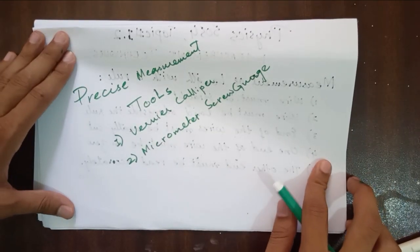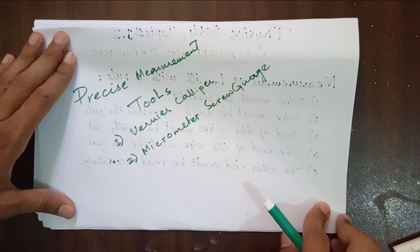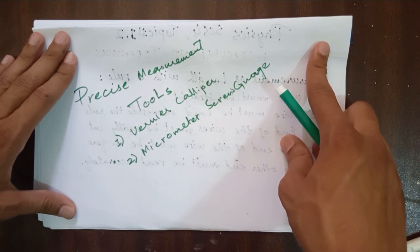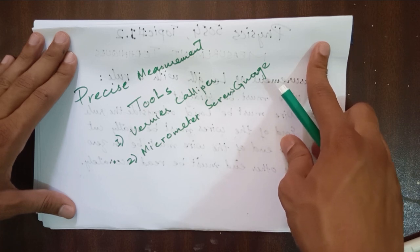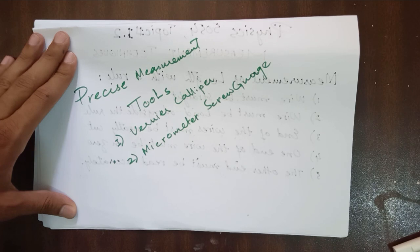There are some other precise measurement tools that we use in the laboratory, that are vernier calipers and micrometer screw gauge. Their use and importance is not necessarily included in our 5054 syllabus. So, I am not including this in this video. I will make a separate video for how to use vernier calipers and micrometer screw gauge.